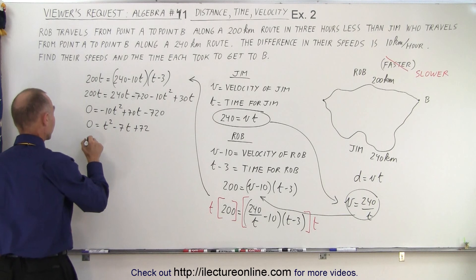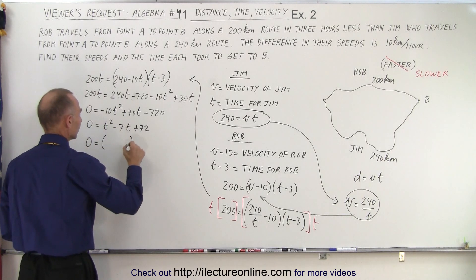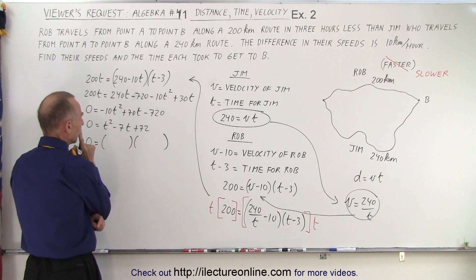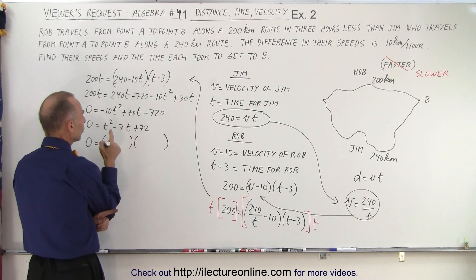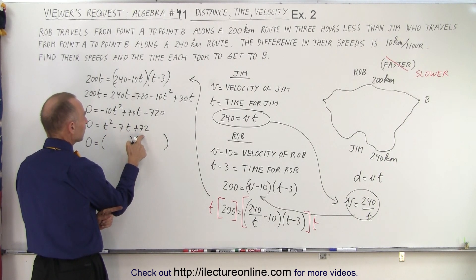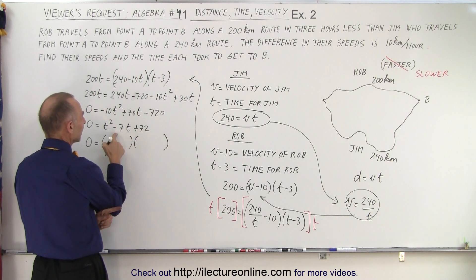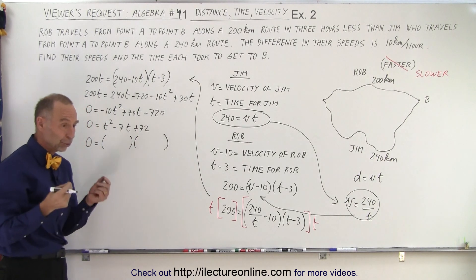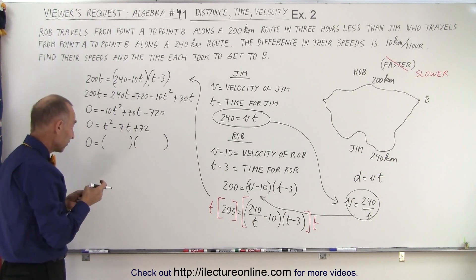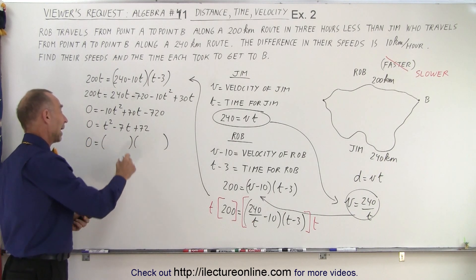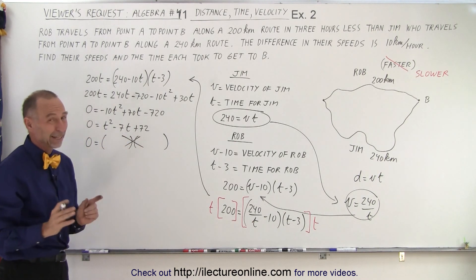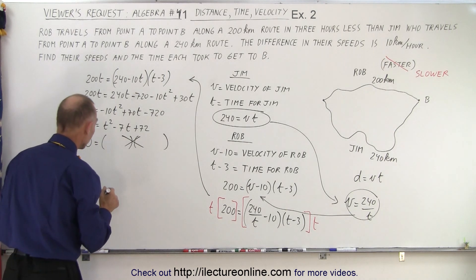Can I factor that? I'll try factoring, see if that works. Zero is equal to, multiply, I get 72, they both must be negative, and when I add them I get negative 7. There's no way I can end up with two numbers that add up to negative 7 and when I multiply I get a positive 72. I cannot factor that. I probably cannot find a real solution to this problem.